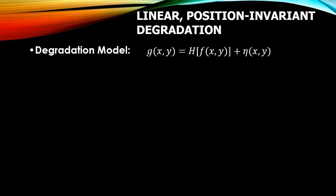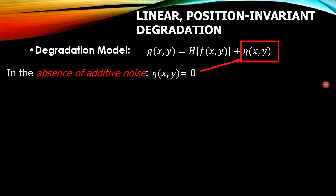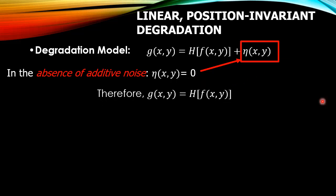Let us now understand the linear position invariant degradations. The degradation model is given as g(x,y) = h[f(x,y)] + η(x,y), where h[f(x,y)] is the degradation function and η(x,y) is the additive noise. For linear position invariant degradations, we consider the absence of additive noise, setting η(x,y) = 0, so g(x,y) = h[f(x,y)].